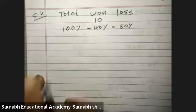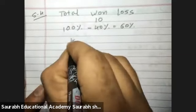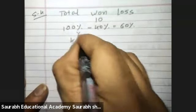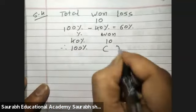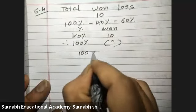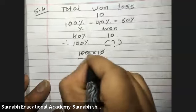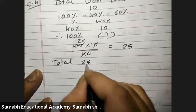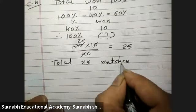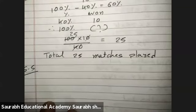So what step we can put. 40 percentage, won 10, therefore 100 percentage how much. 100 into 10 upon 40. 0 0 cut, 4 25 is up, so in all total 25 matches played. Getting everyone? Yes sir. Please let me know if you are not getting, please do not hesitate.